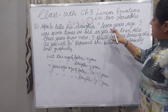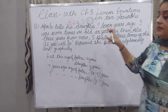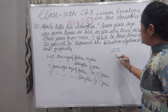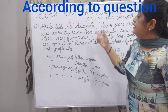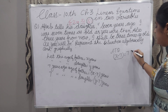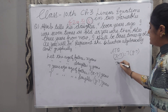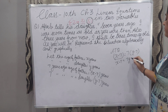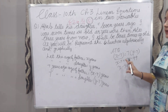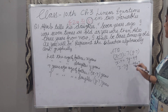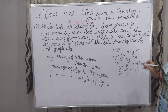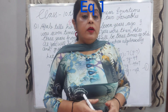Now, reading the statement again: 7 years ago, I was 7 times as old as you were. According to the question, father's age 7 years ago was 7 times his daughter's age 7 years ago. So X minus 7 equals 7 times (Y minus 7), which gives X minus 7 equals 7Y minus 49. Rearranging: X minus 7Y equals minus 42. This is equation number 1.